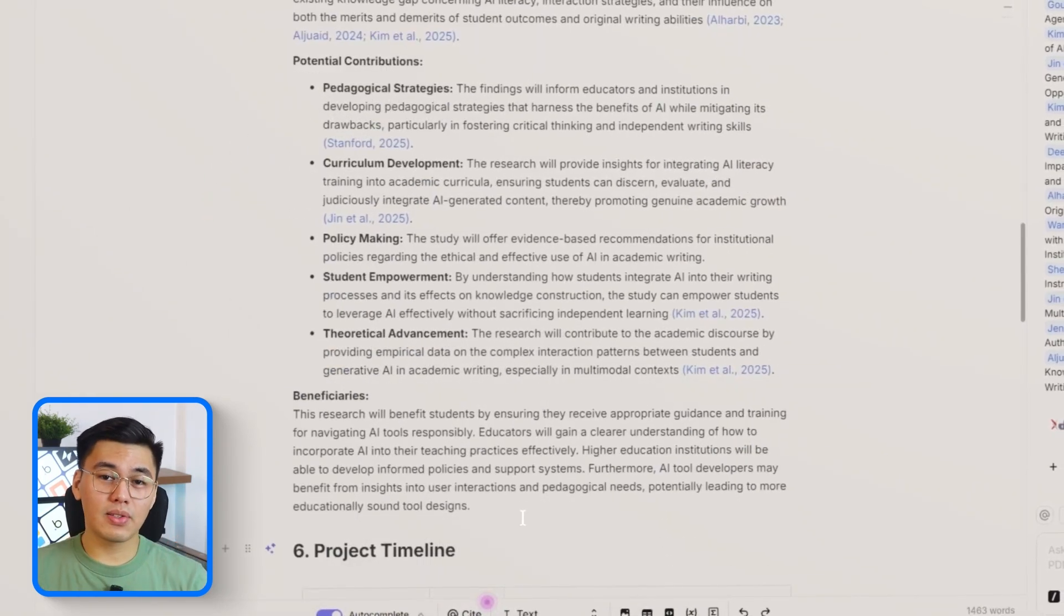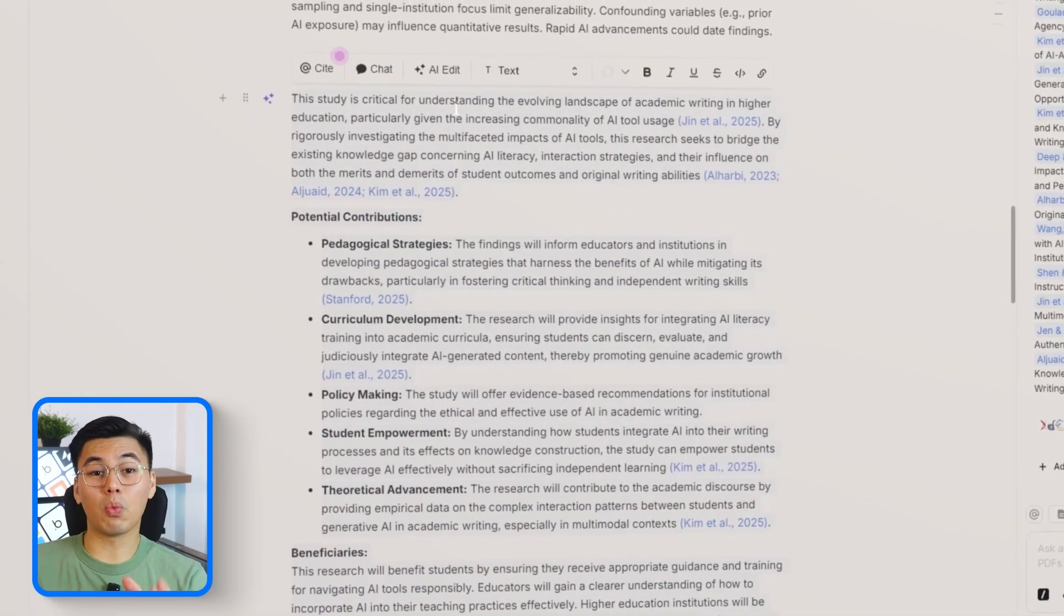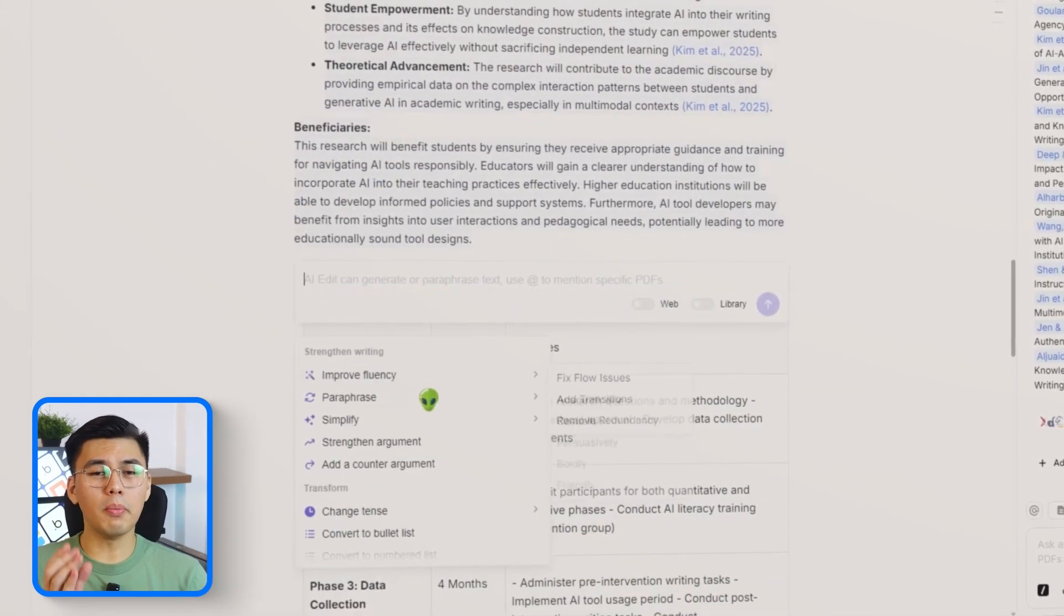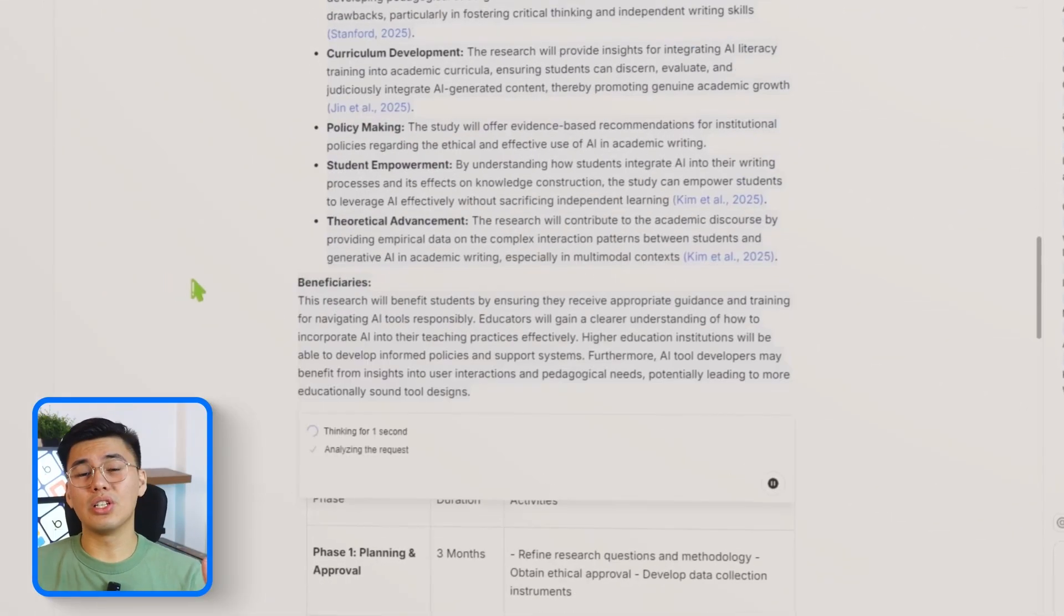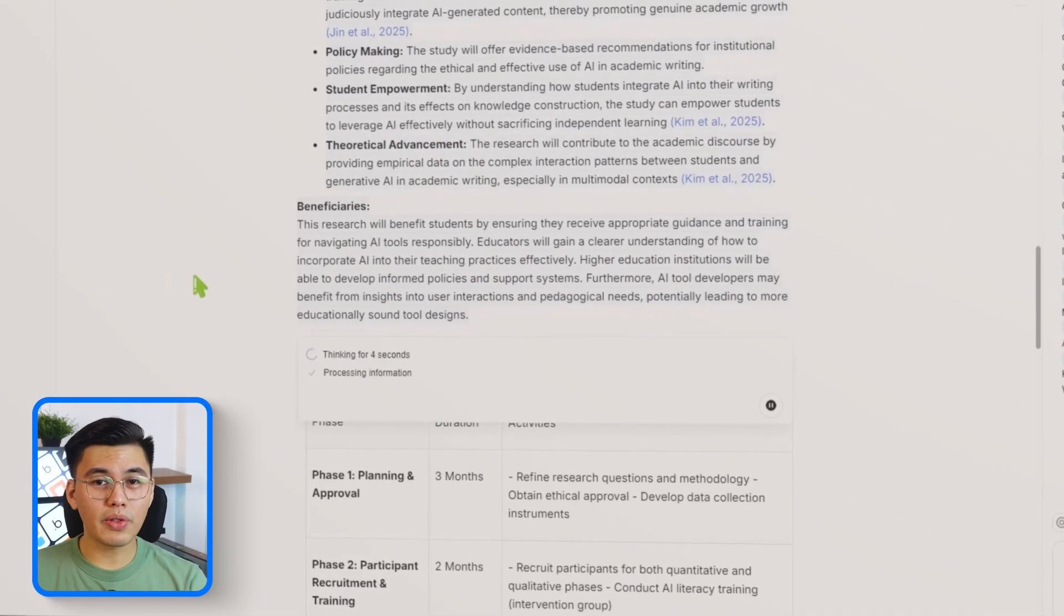Now, we'll move into the significance section - the part where you explain why the study matters and who benefits from it. We'll do the same thing here. After running this section, Jenny clarified the contribution of the research, made the reasoning more direct,